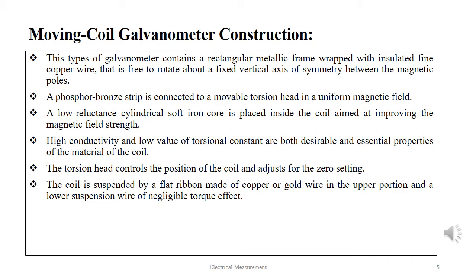A moving coil galvanometer contains a rectangular metallic frame wrapped with insulated fine copper wire that is free to rotate about a fixed vertical axis of symmetry between the magnetic poles. A phosphor bronze strip is connected to a movable torsion head in a uniform magnetic field. A low reluctance cylindrical soft iron core is placed inside the coil to improve the magnetic flux strength.